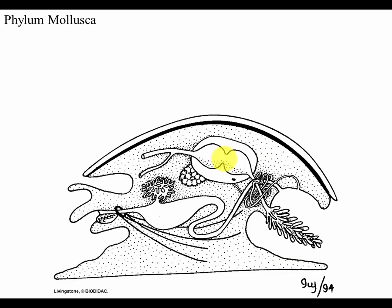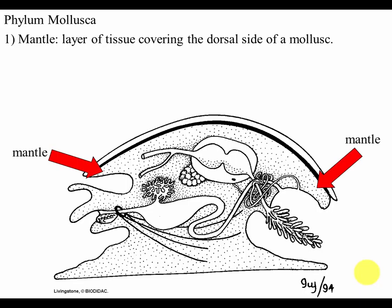The fundamental and ancestral body form of a mollusk probably looks something like this. There are a few features you should know about the basic mollusk body plan and how they've been modified in different groups of mollusks extant today. The first feature is this layer of tissue that covers the dorsal side of a mollusk, called the mantle tissue.